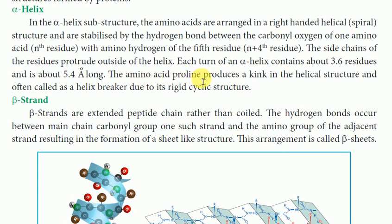Proline produces a kink in the helical structure and is often called a helix breaker due to its rigid cyclic structure.